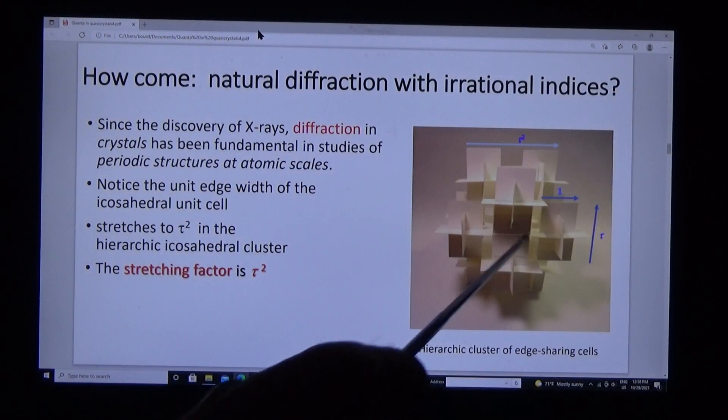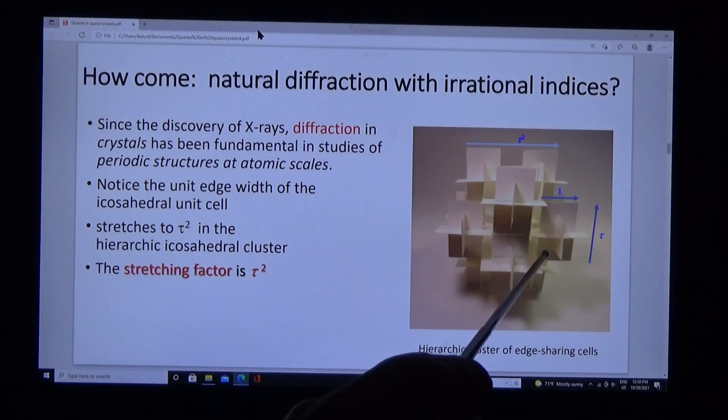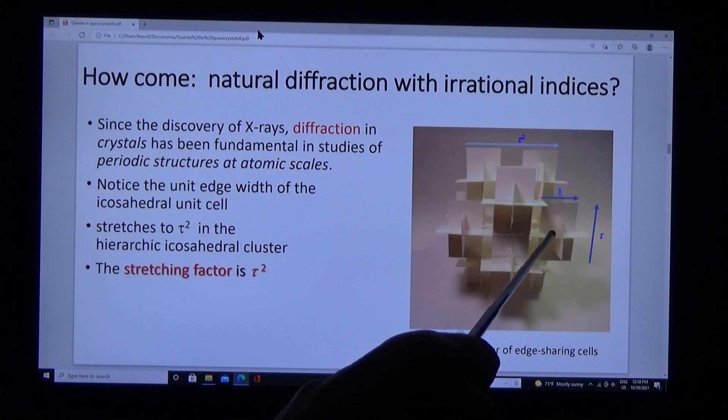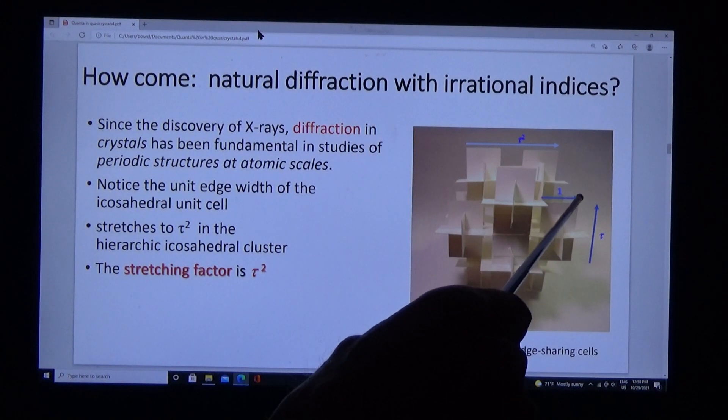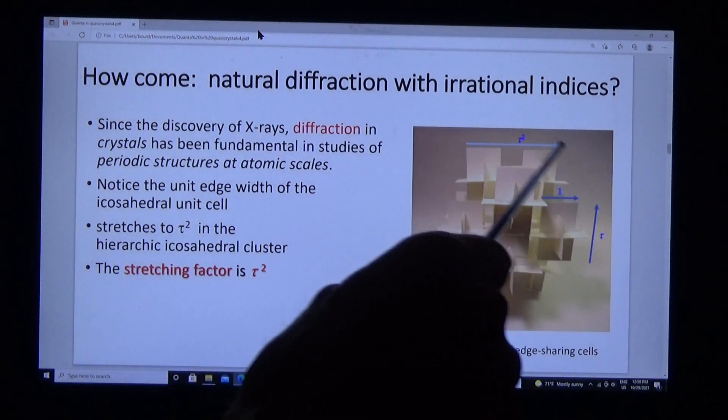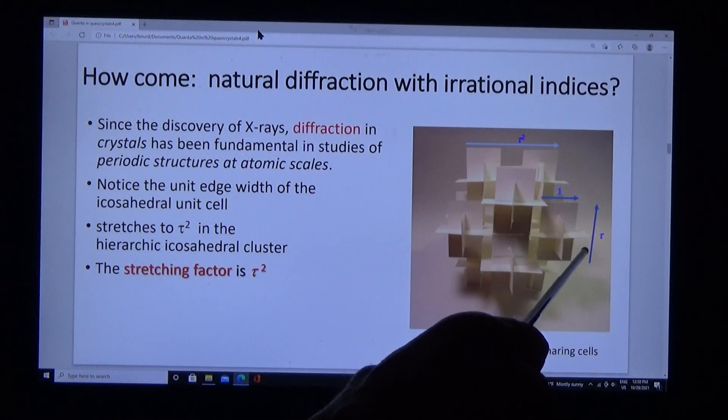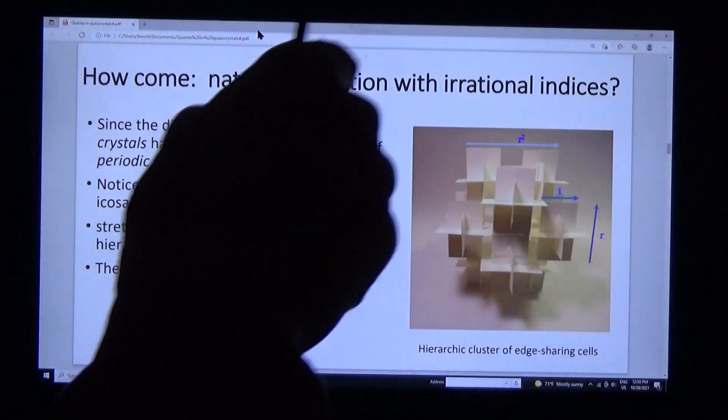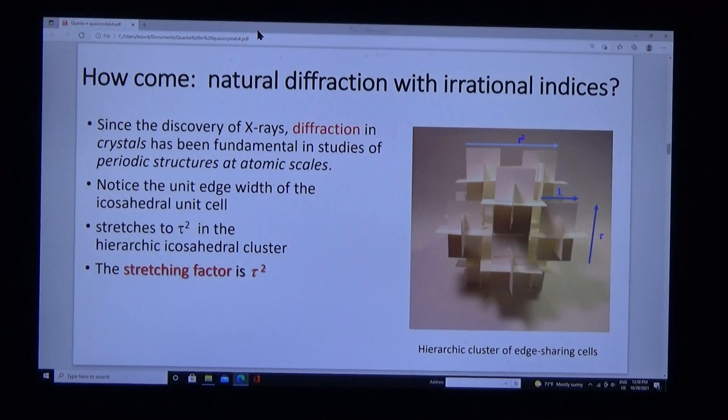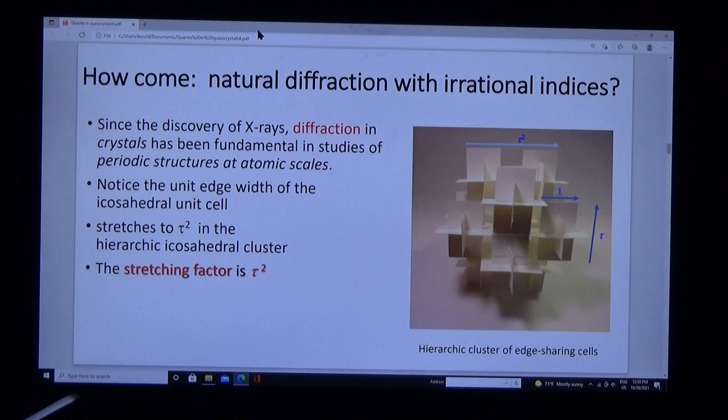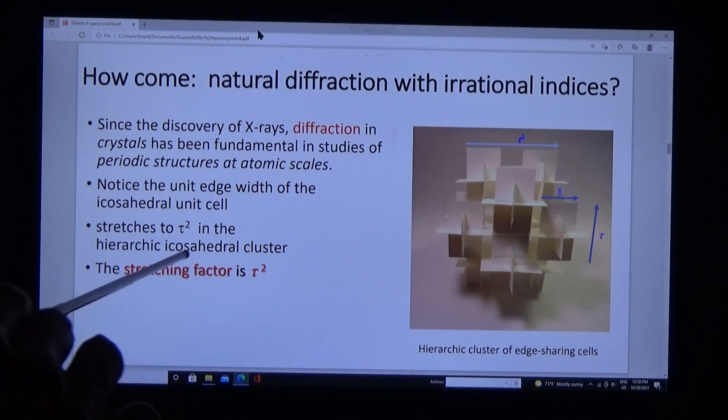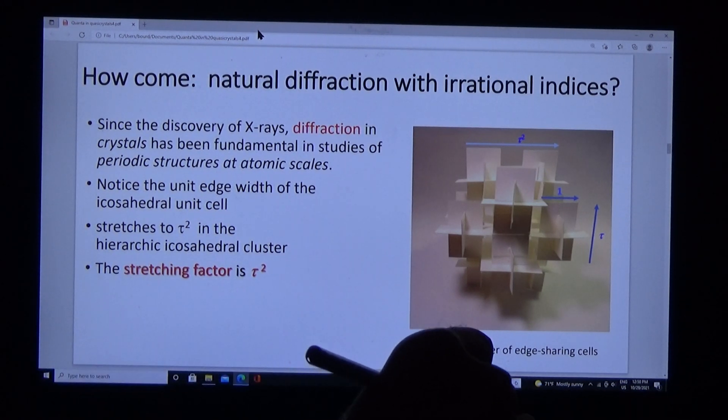Here's the same unit cell in a cluster. The cluster's edge-sharing, not face-sharing as in crystals. The unit edge-width stretches to tau squared in the icosahedral cluster and to tau to the power 4 in the icosahedral supercluster—extensible indefinitely. The stretching factor is tau squared.